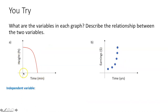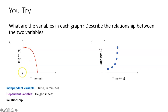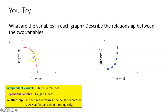For part A, our independent variable is going to be along the x-axis: time in minutes. Our dependent variable is along the y-axis: height in feet. The relationship: as time increases, your height decreases at first slowly and then decreases much more quickly over time. It's like if you were to drop something off a really high ledge — it starts going slowly at first, then as acceleration due to gravity increases its speed, it falls faster and faster.